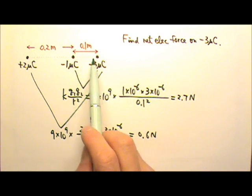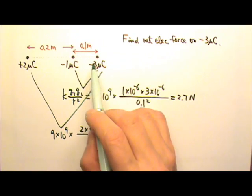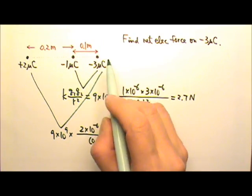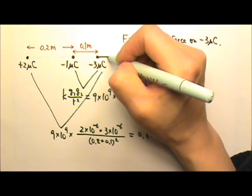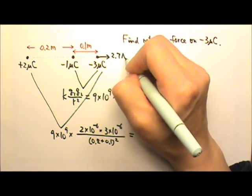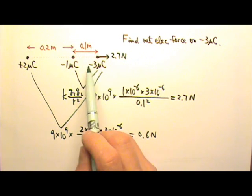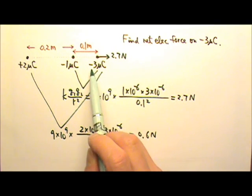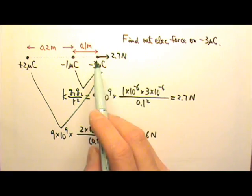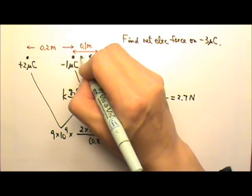The force between those two, since they're both negative, is a repulsive force. Therefore, the force on the negative 3 µC will go to the right. And that's the 2.7 N. The force between those two, attractive force. So the force pulls on the negative 3 µC to the left. And that's the 0.6 N.